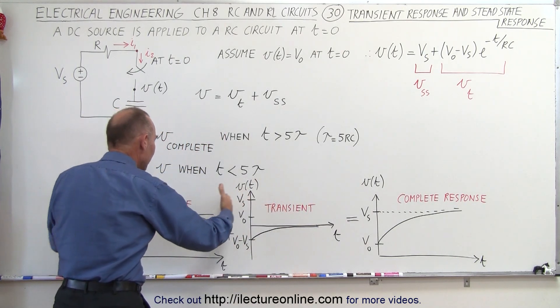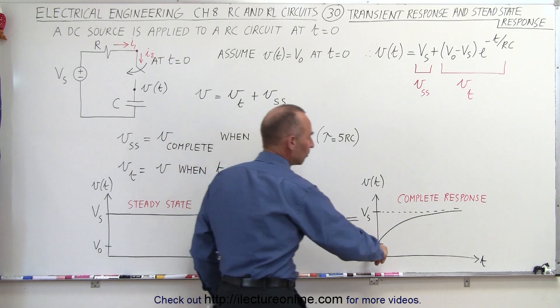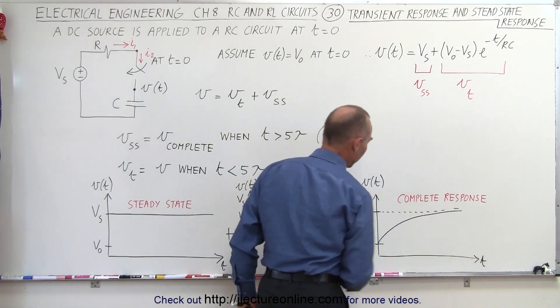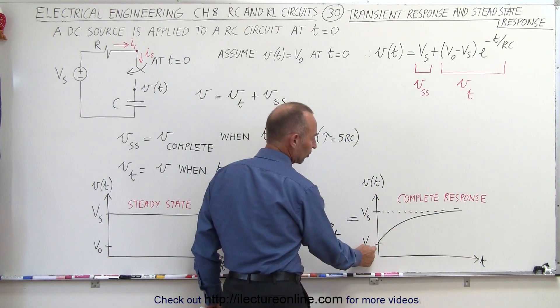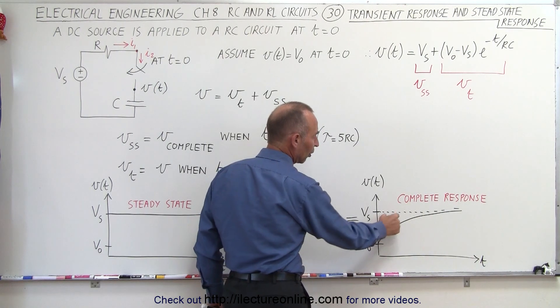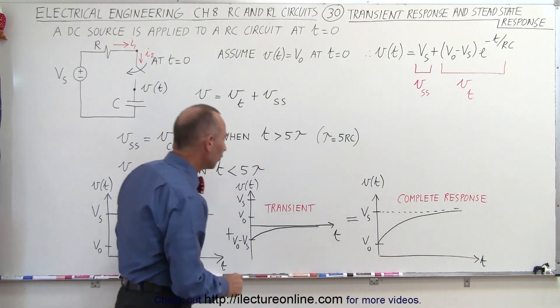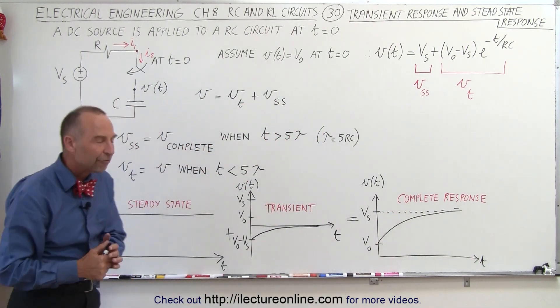That's the transient state. When we combine the two, then this is what the complete response of the circuit will look like, where the voltage across the capacitor goes from the initial voltage to the steady-state voltage. So the transient is often misunderstood.